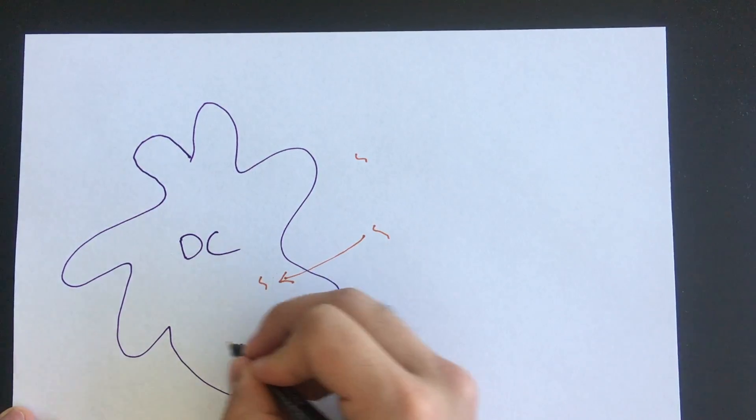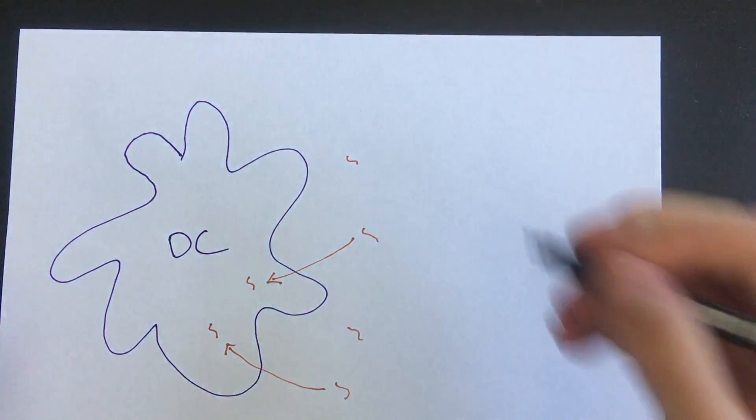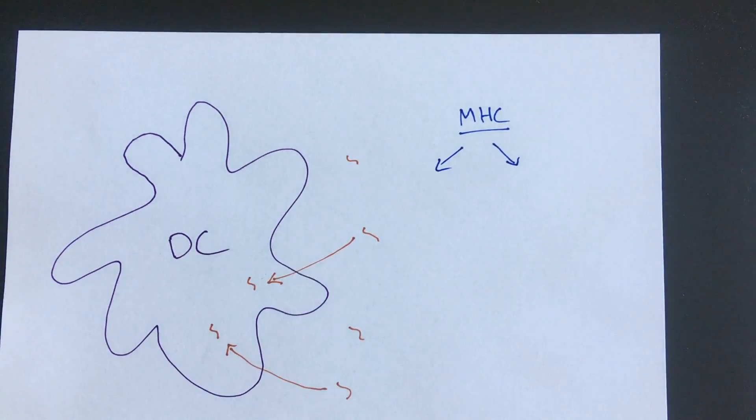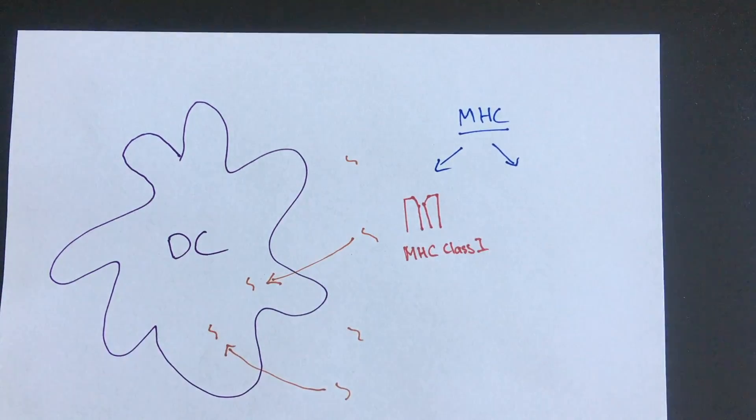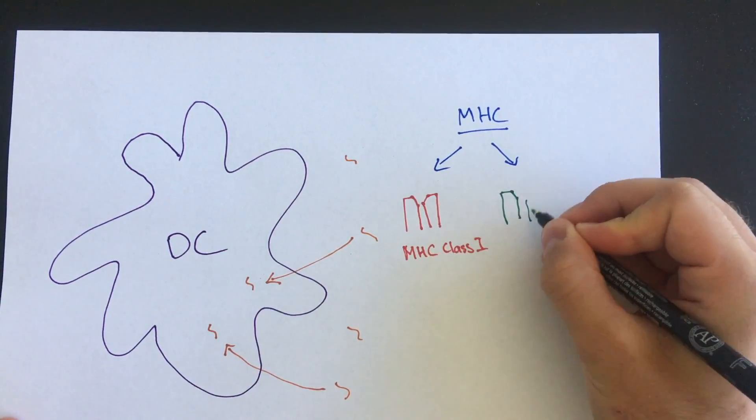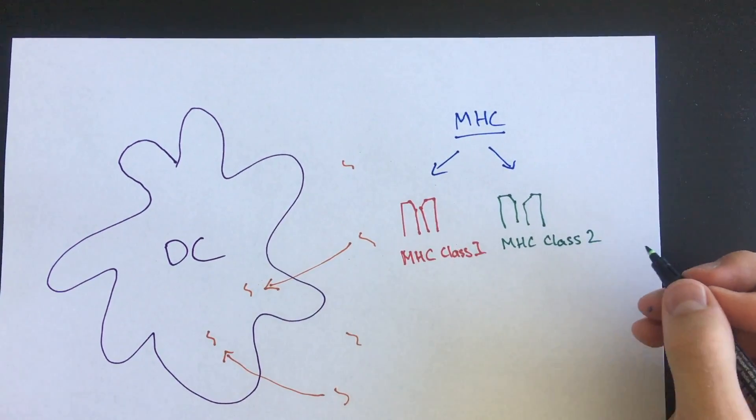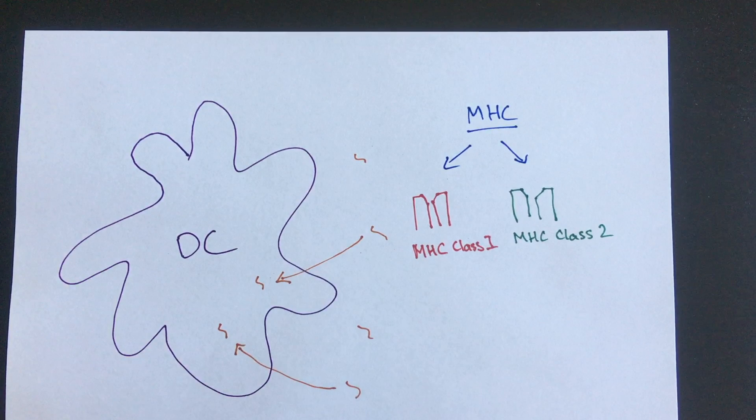But to present these antigens to T cells of the adaptive immune response, these antigens need to first bind molecules called major histocompatibility molecules. There are two classes of MHC: MHC1 and MHC2, which bind to antigens that are composed of peptides. These MHC differ based on which peptides combine with them and the types of T cells that can recognize them.